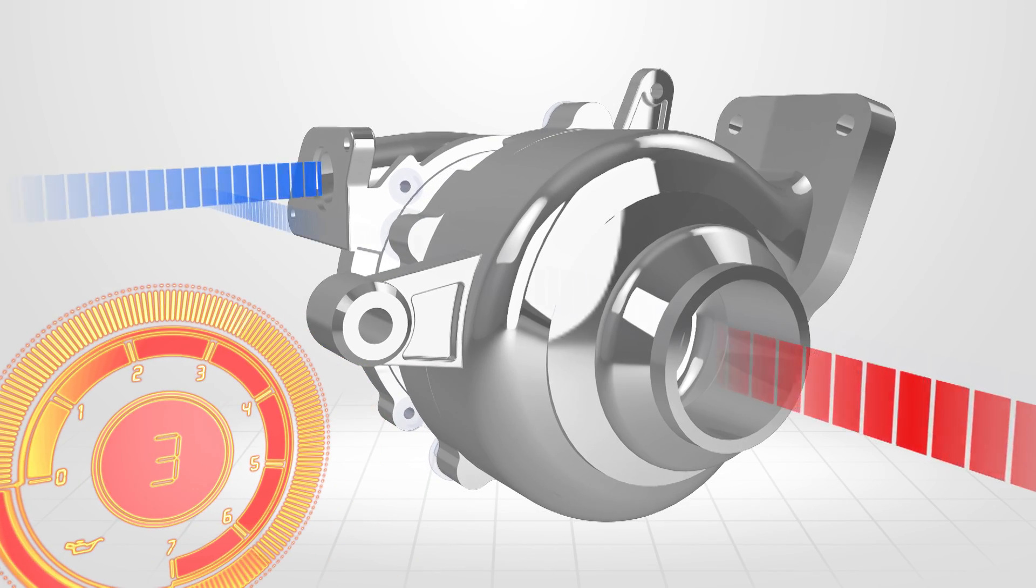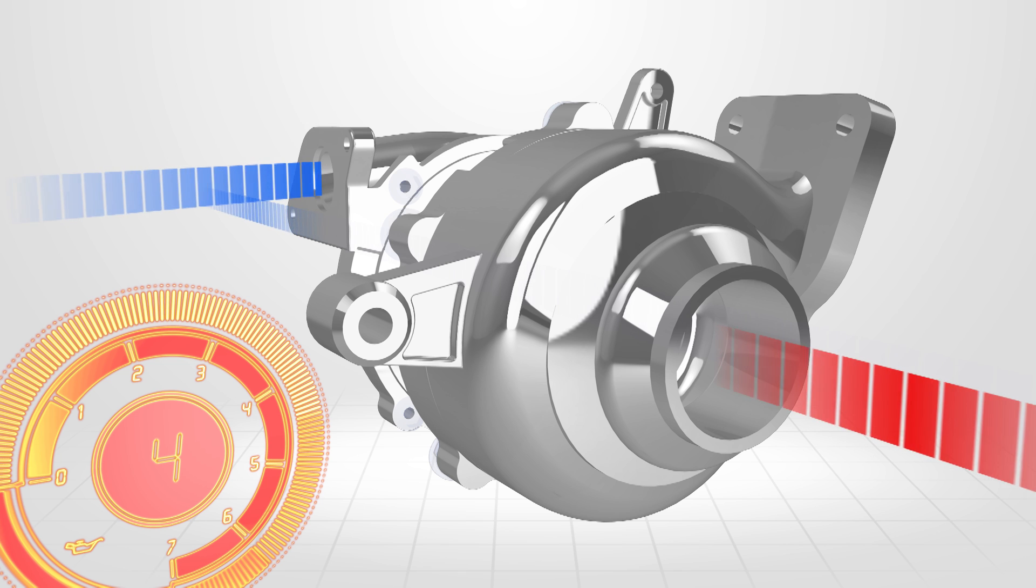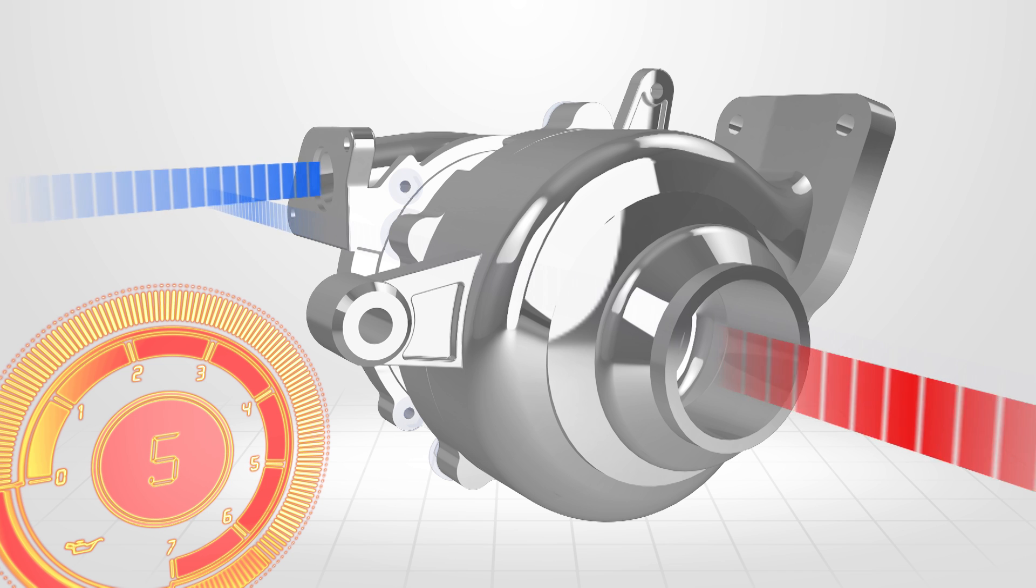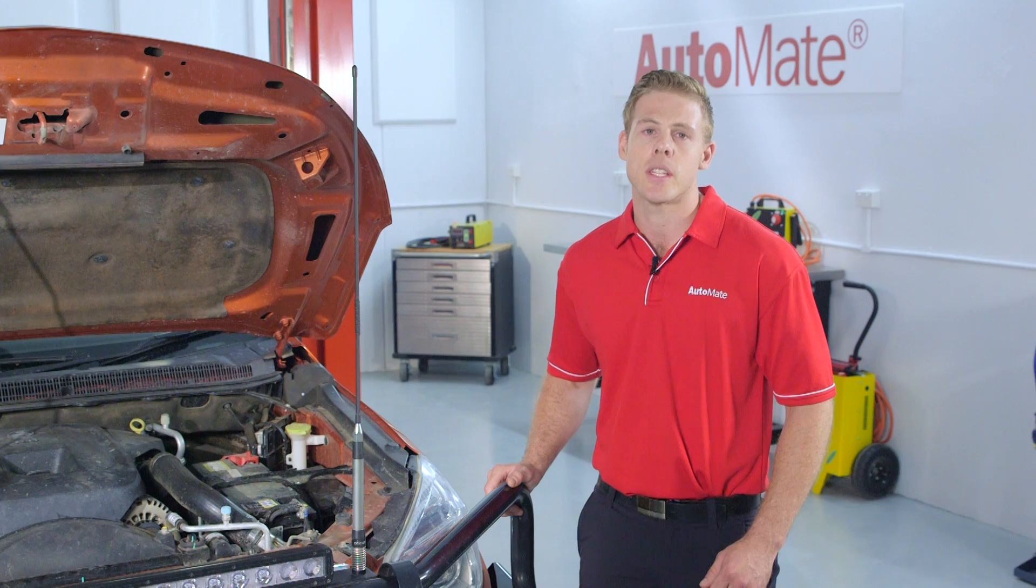The ECM will increase the engine speed to meet the driver torque request. The increased engine speed produces more exhaust gas flow through the turbine. This results in very fast turbine speeds, which may cause excessive boost pressures.